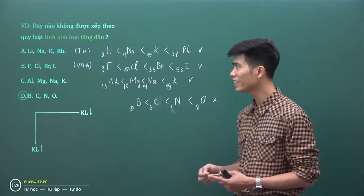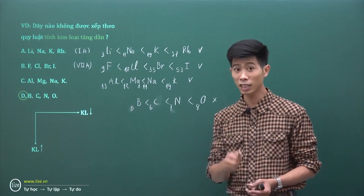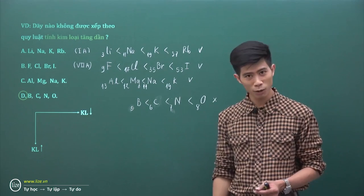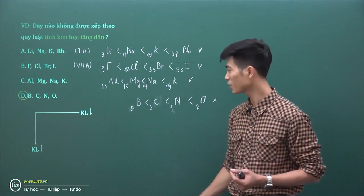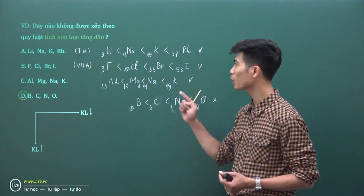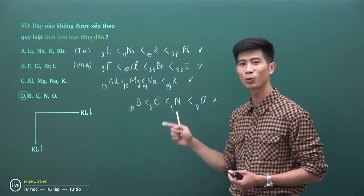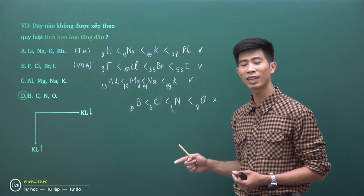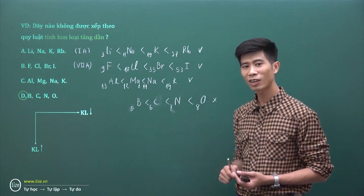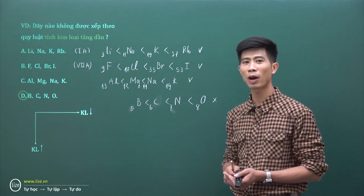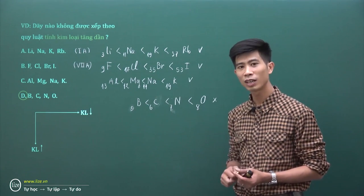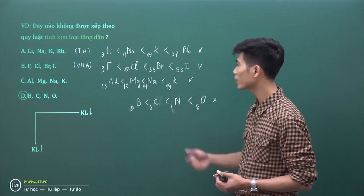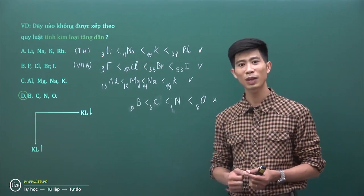Thực tế khi làm bài, đầu bài sẽ không cho sử dụng bảng hệ thống tuần hoàn. Các em phải tư duy, phải nhớ được số hiệu nguyên tử, phải nhớ được các nguyên tố nào thuộc cùng nhóm, cùng chu kỳ, và sắp xếp theo chiều nào của điện tích hạt nhân - tăng hay giảm. Sau đó sẽ khó hơn, không thể cầm bảng hệ thống tuần hoàn làm nhanh như vậy.